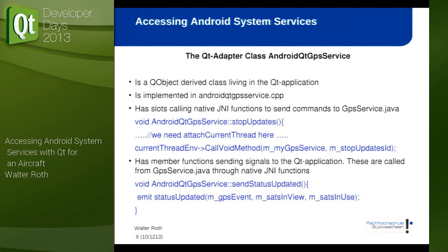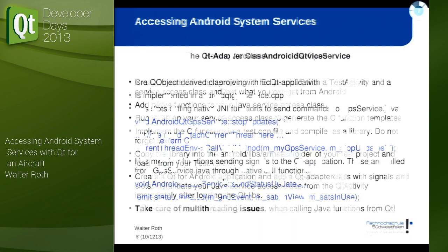The second ingredient is the adapter class. This is a QObject-derived class living in the Qt application and in the Qt application threads — that's important. The Qt application is running in different threads from the Java class, so we need to cross the thread boundaries.